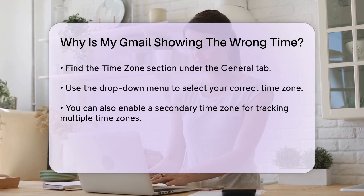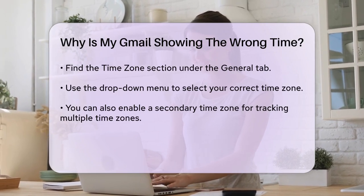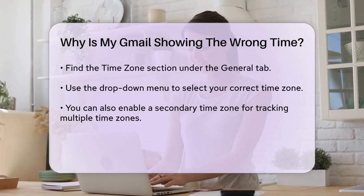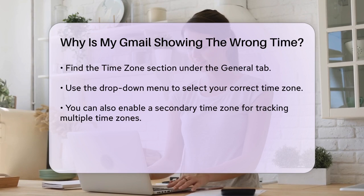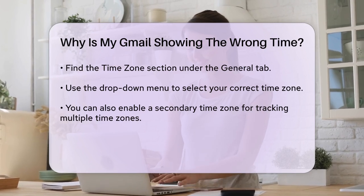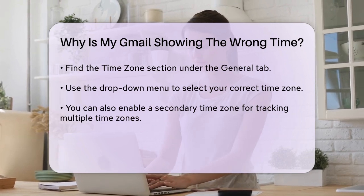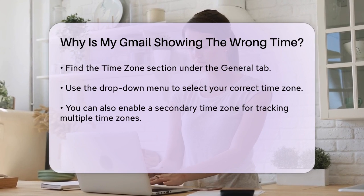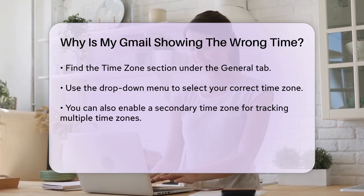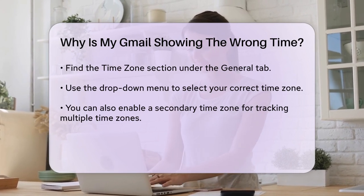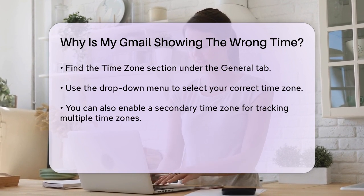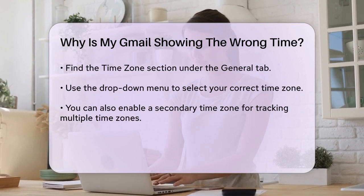Another important step is to ensure your device's time zone is set correctly. If your device's time zone is wrong, it can affect how Gmail displays times. For instance, on a Windows device, you would go to the Control Panel, click on Clock and Region, and then change the time zone to the correct one.